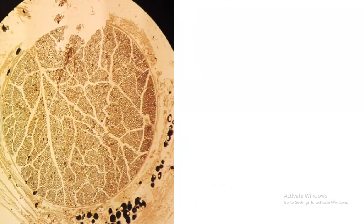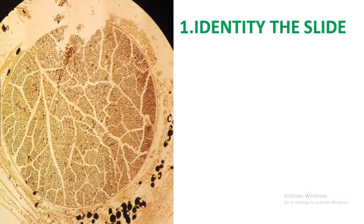Let's quickly look at the next slide, which is a very important slide. When you identify this slide, there are some dark-spotted myelin parts which have been stained black, and you can also see some axons. This slide is just a sciatic nerve. I'll go into much more detail in histology revision number nine.